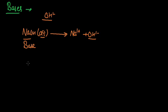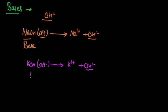On the other hand, if I talk about potassium hydroxide, when we take the aqueous solution of this potassium hydroxide, it again ionizes to give potassium cation and hydroxyl anion. And since it also gives hydroxyl ion in its aqueous solution, it can also be termed as a base.